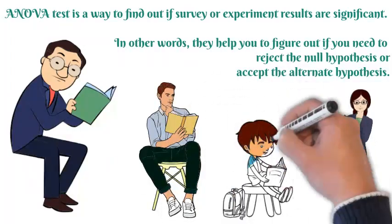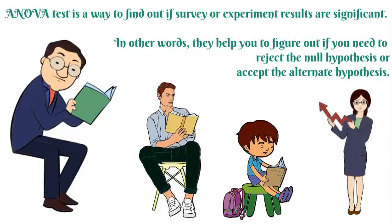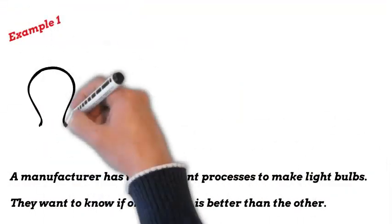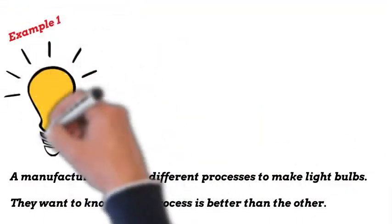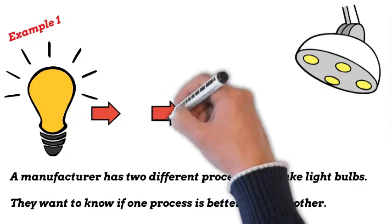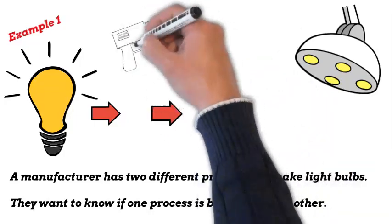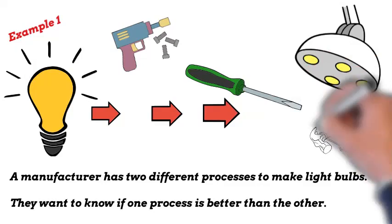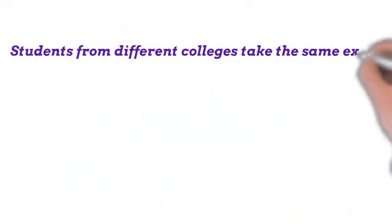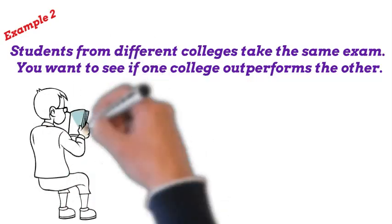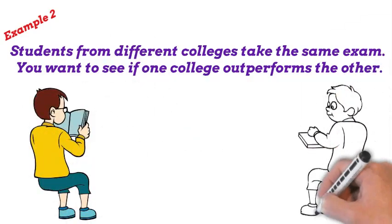Here we can look at two examples of when you might want to test different groups. For example, a manufacturer has two different processes to make light bulbs and wants to know if one process is better than the other. Another example: students from different colleges take the same exam, and you want to see if one college outperforms the others.